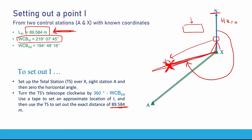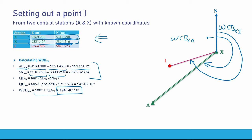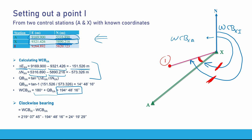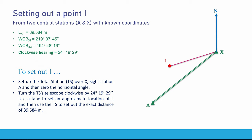In the second method, we calculate the clockwise bearing — the angle between line XA and line XI. This is simply the whole circle bearing of XI minus the whole circle bearing of XA. We have both values already calculated, so the clockwise bearing is 24 degrees 19 minutes and 29 seconds.